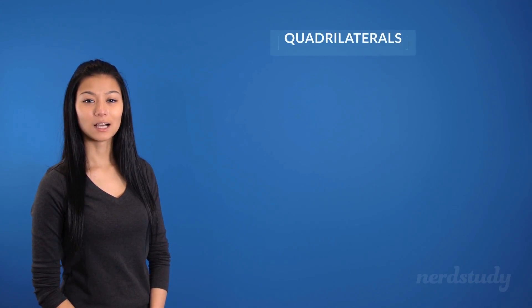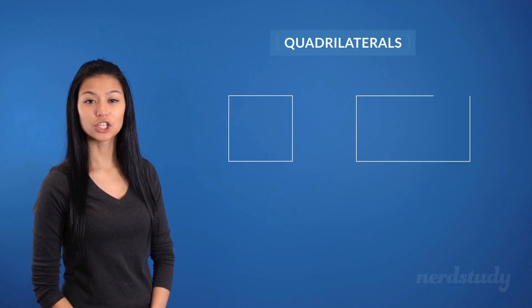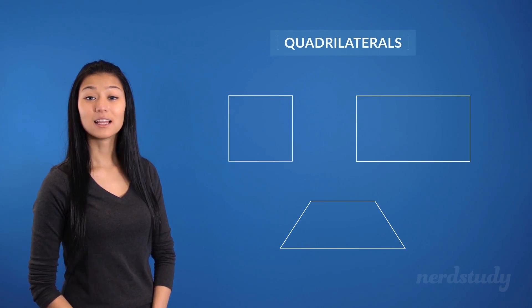If you recall correctly, a quadrilateral is a closed shape that has four sides, like these ones here.